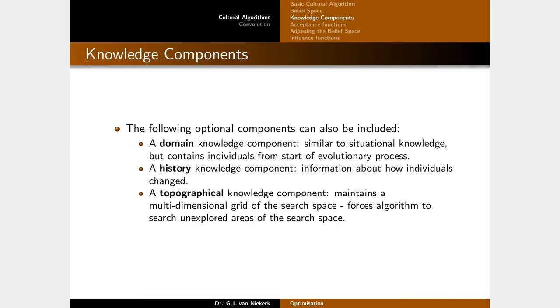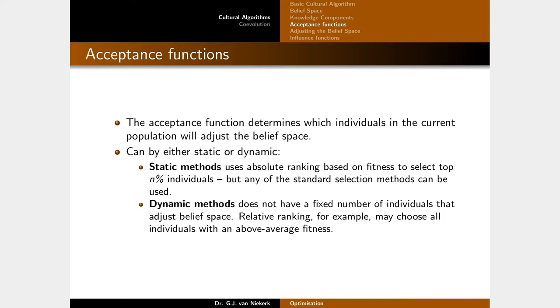There are four main functions driving the cultural algorithm process. The first is the acceptance function, which determines which individuals in the current population will adjust the belief space. Methods fall into two categories: static methods, where you select the top n individuals or top n percentage of individuals; and dynamic methods, such as calculating the average fitness and allowing all individuals above that threshold to influence the belief space.